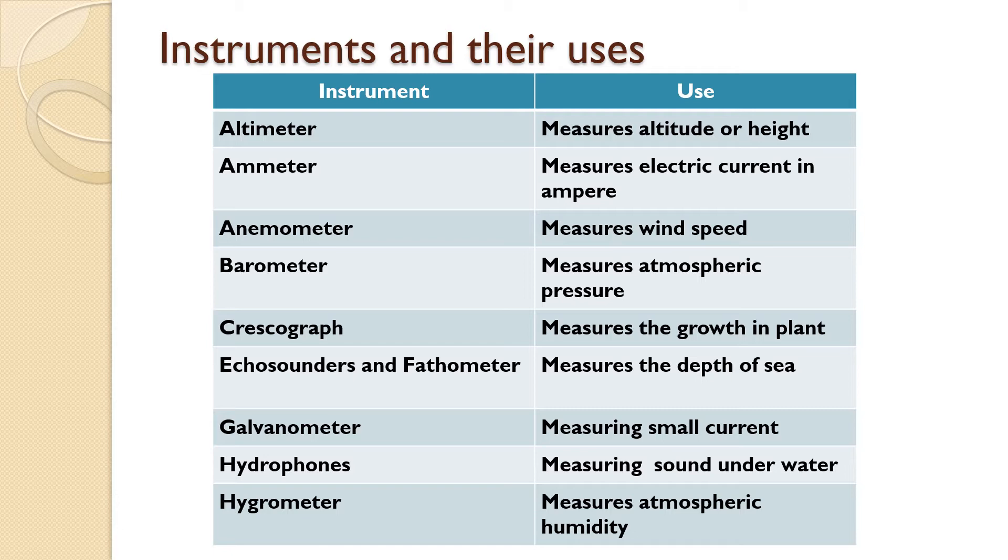Barometer to measure atmospheric pressure, crescograph is to measure the growth in plant, echo sounders and fathometer measure the depth of sea.